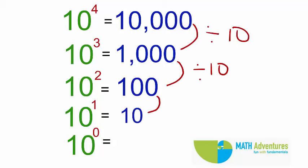Again, 100 divided by 10 gives me 10, which is 10 to the power of 1. If I divide 10 to the power of 1, or 10, by 10, what will I get? Will I not get 1? Can I say 10 to the power of 0 is equal to 1?